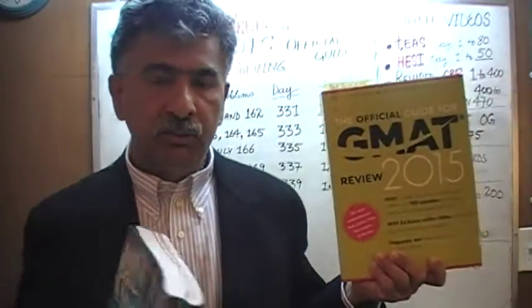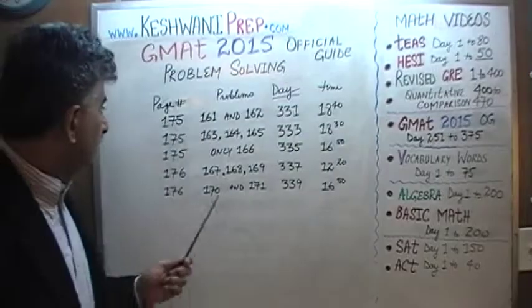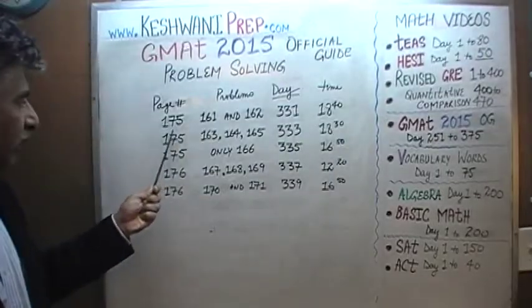It just so happens that all the math problems appearing in the 2015 edition are exactly the same problems that appeared in the 13th edition of the GMAT. We have already solved every single math problem from the 13th edition. I'm not going to redo them — I'm simply going to tell you where to find the solution to a given problem. Let's begin. We'll start from page number 175.